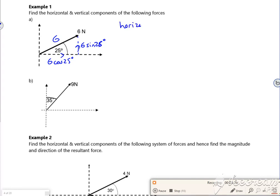So horizontally, it's six cos 25, which the completed pack says is six cos 25, don't work out. And vertically, it's six sine 25.